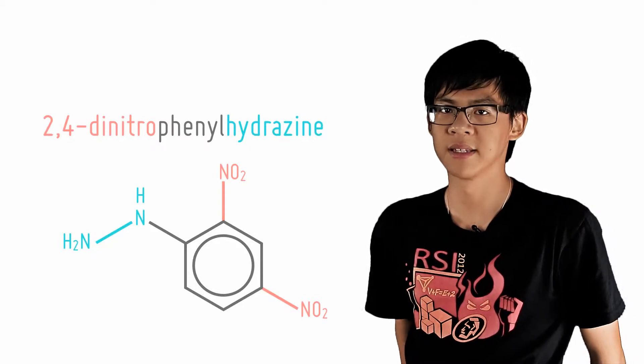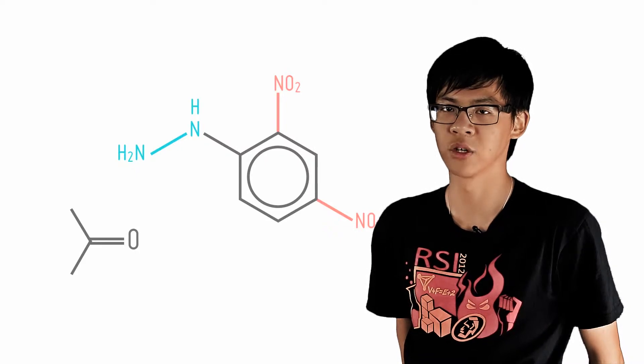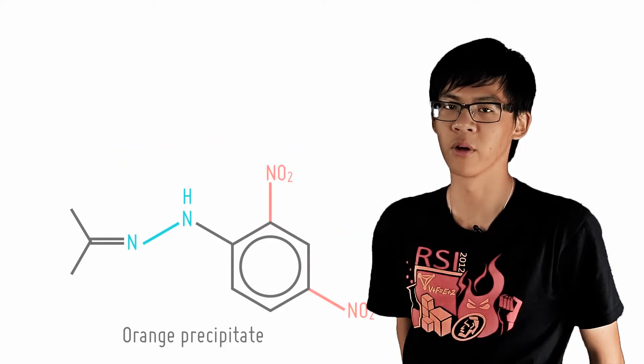Now with ketones and aldehydes alike, 2,4-DNPH reacts to form compounds that we call 2,4-dinitrophenylhydrazones, along with water as a byproduct.